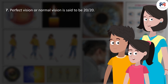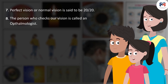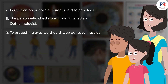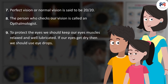Perfect vision or normal vision is said to be 20/20. The person who checks our vision is called an ophthalmologist. To protect the eyes, we should keep our eye muscles relaxed and well lubricated. If our eyes get dry, then we should use eye drops.